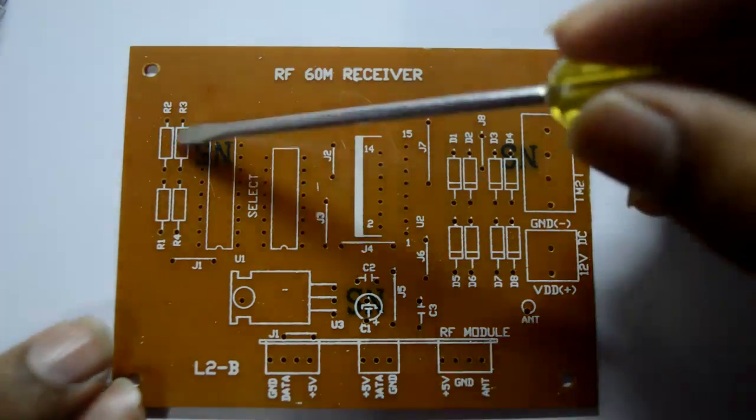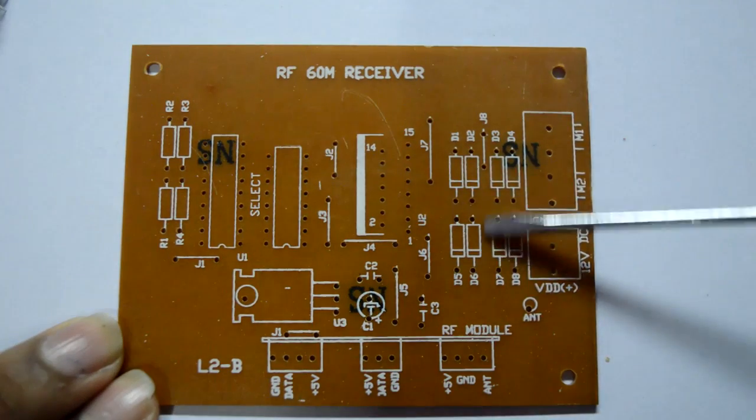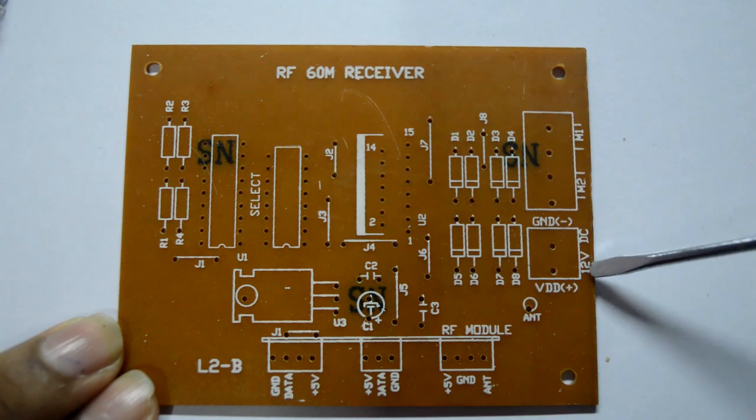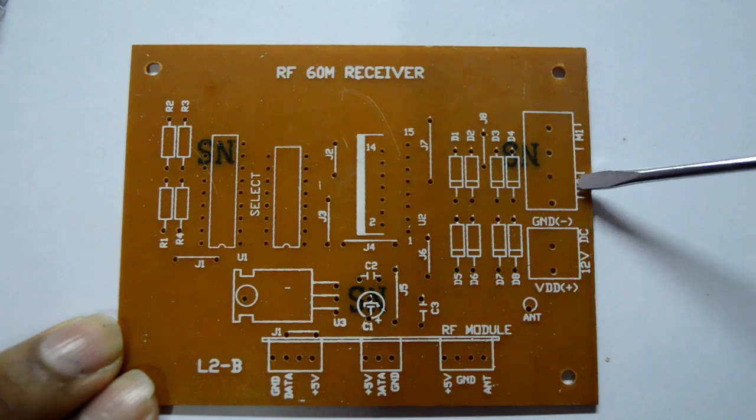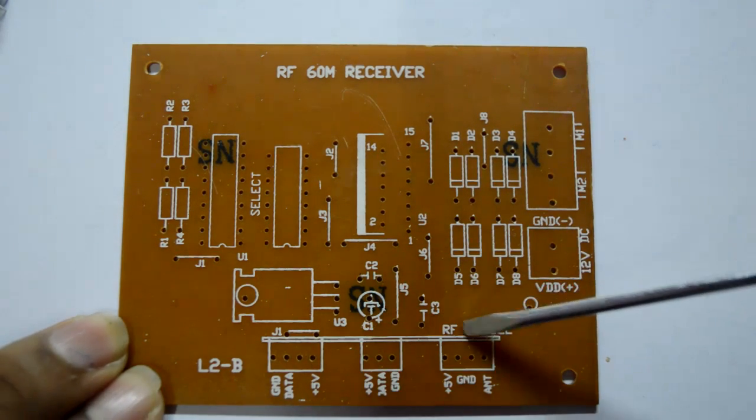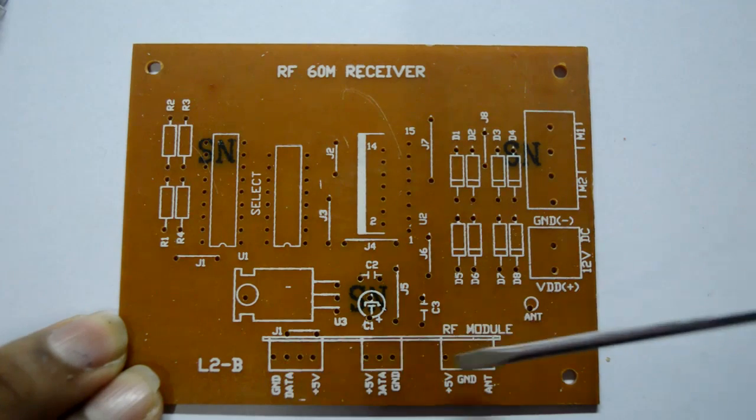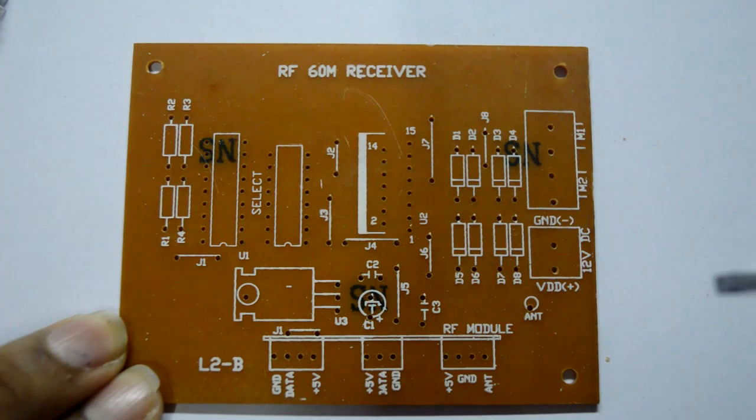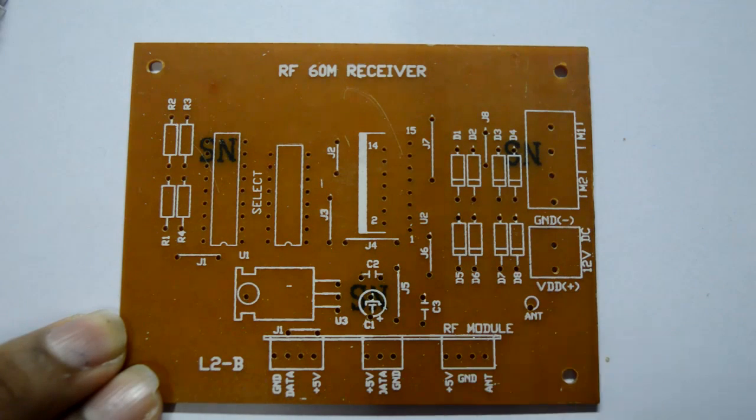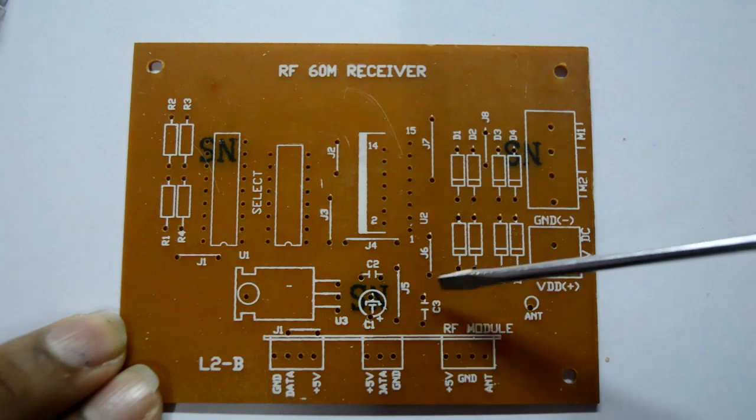Here you are having some resistors, here we have some diodes, and this is the 12 volt DC input. These are the motor inputs, two motor inputs for the four channels. These are the places where the RF module goes. You can also insert the 8 pin modules as well as the 3 pin modules. This is IC 7805. We are having some capacitors over here.